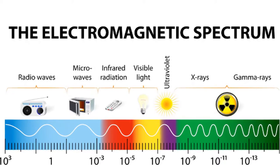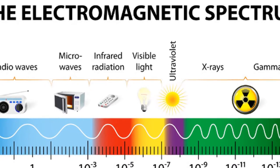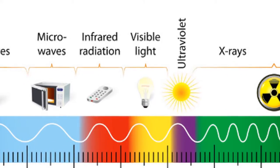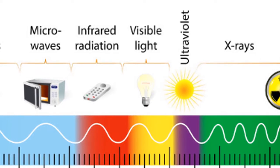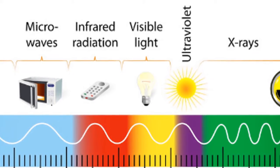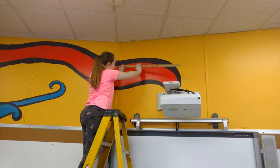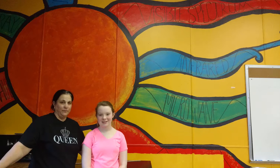Visible light occupies a narrow slice of the electromagnetic spectrum between infrared and ultraviolet. In my mural, we put the visible light wave running into the projector because it uses visible light. When you look at my mural, you can see the name of the wavelengths with the wavelengths before and after it.